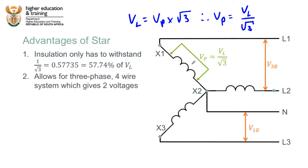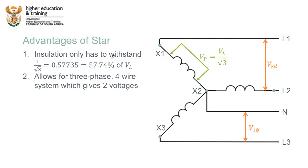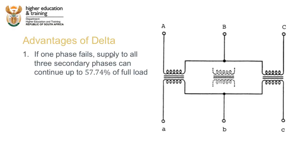Secondly, a star configuration gives us the potential for a four-wire system where we can get two distinct voltages: either the full three-phase voltage between any two lines, or a single-phase voltage between any line and the neutral point. The advantage of delta is that if one of the phases fails, supply to all three secondary phases can continue, but only to about 57.74% of the full load. Now let's look at an example.